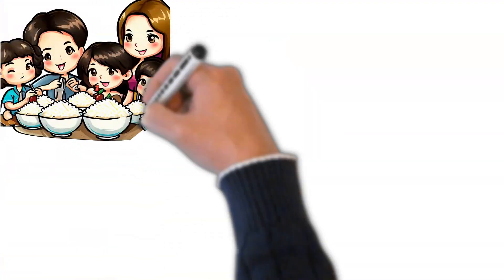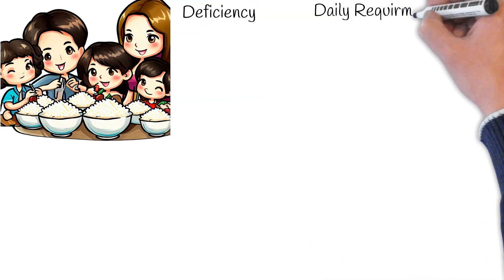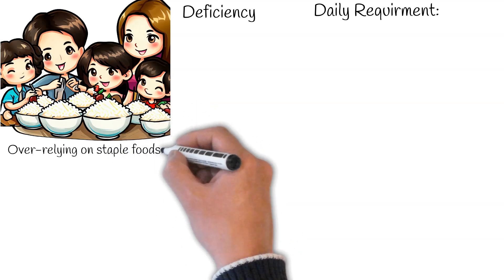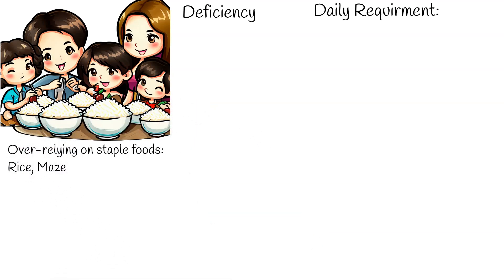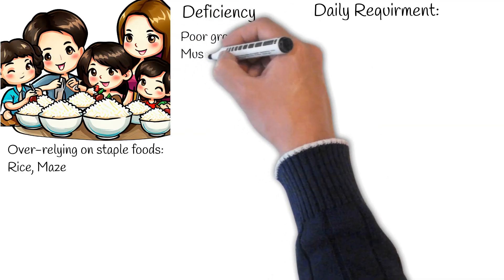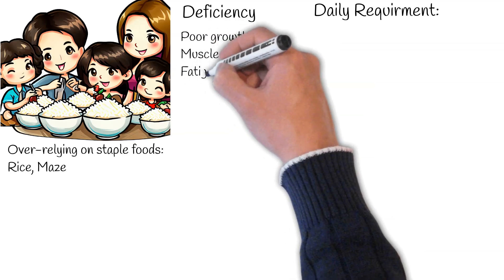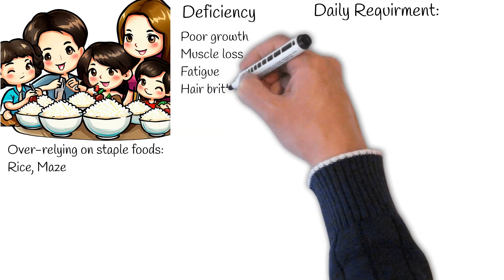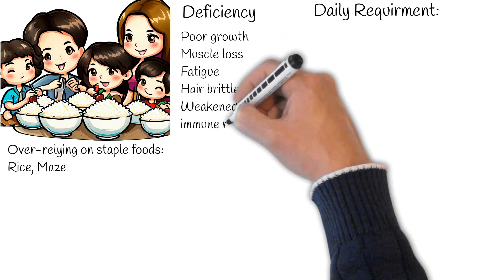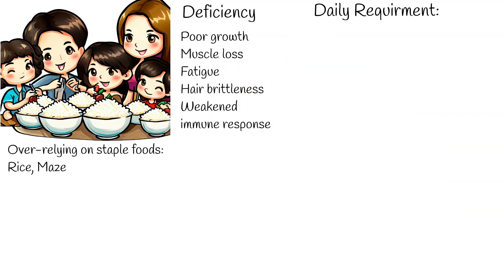A common pitfall many face is over-relying on staple foods that do not provide a comprehensive amino acid profile, such as rice and maize. This over-reliance can result in essential amino acid deficiencies. Indicators of such deficiencies include poor growth in children, muscle degradation, fatigue, skin and hair anomalies like rashes and brittleness, and a weakened immune response, manifesting as frequent illnesses or extended recovery durations.